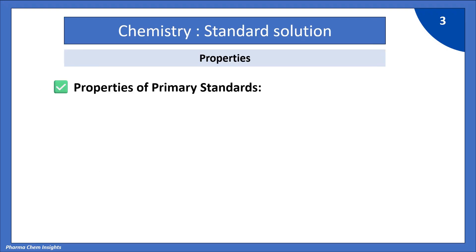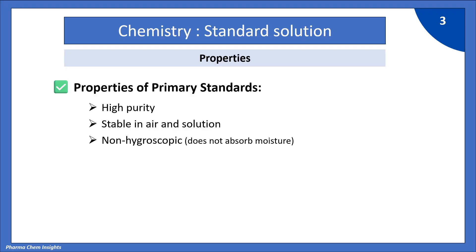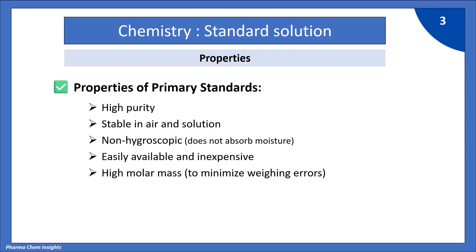Let's see the properties of primary standards. It has high purity. It is highly stable in air and solution, meaning it does not react in its pure form. It is non-hygroscopic, meaning it does not absorb moisture. It is easily available and should be inexpensive. It has a high molar mass, that is molecular weight, which helps in minimizing weighing errors.